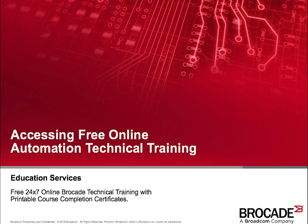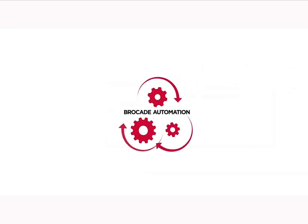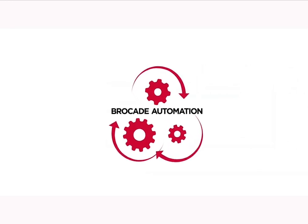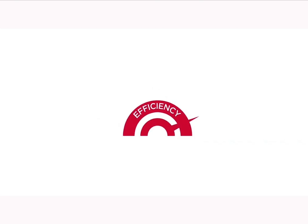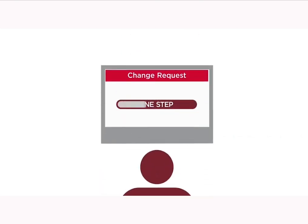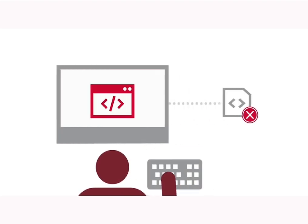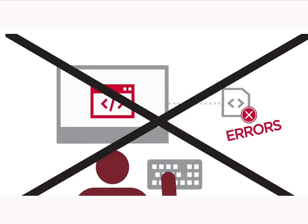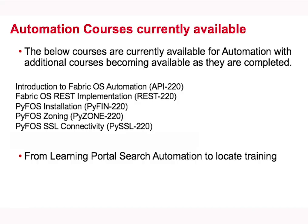Accessing free online Brocade automation technical training. For those new to automation, automation increases efficiency. Repetitive tasks such as zoning take one step, not many, and complete in a fraction of the time while also eliminating human error, which increases consistency. We currently have five automation technical training courses available, with additional courses becoming available as they are completed.